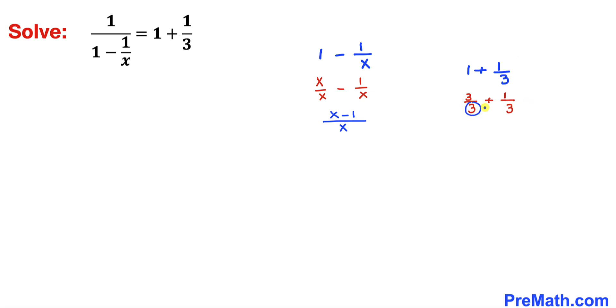Now we can see we have 3 as a common denominator, so I can write 3 in the denominator. On the top is going to be 3 plus 1. So therefore we get 4 divided by 3. Our right hand side has been simplified to 4 divided by 3.